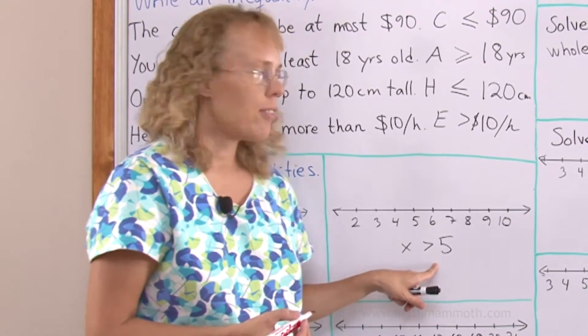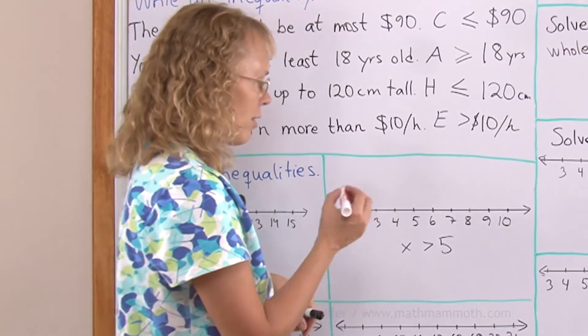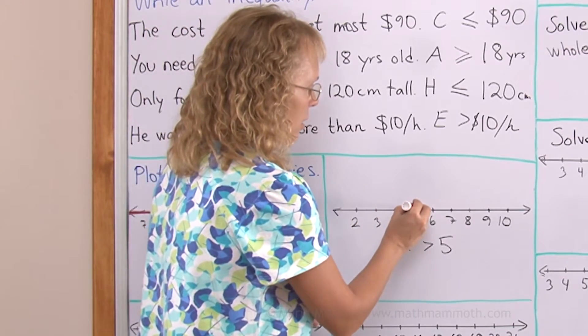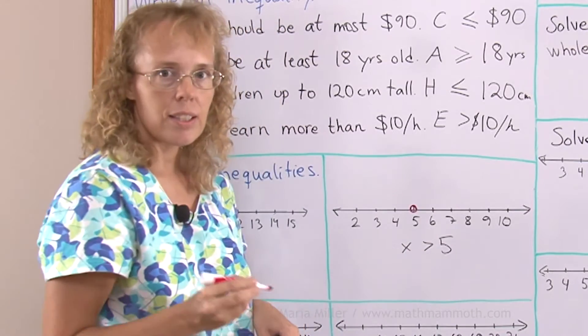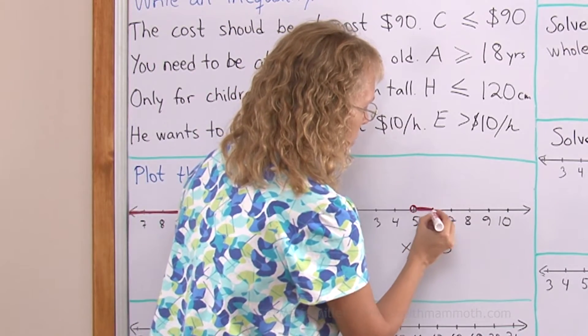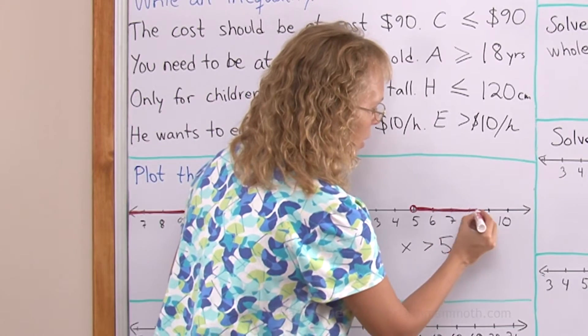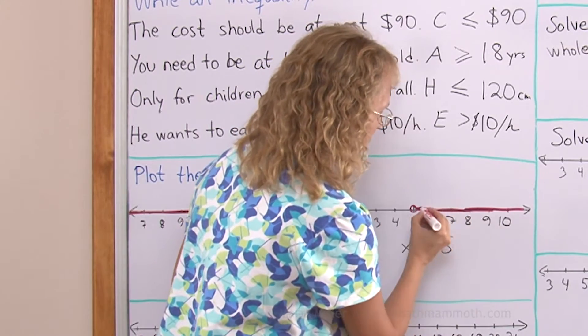x is greater than 5. Okay? Now that means that 5 will not fulfill this inequality, but any number after that, any number that's bigger than 5 will. So I will color the number line after 5.